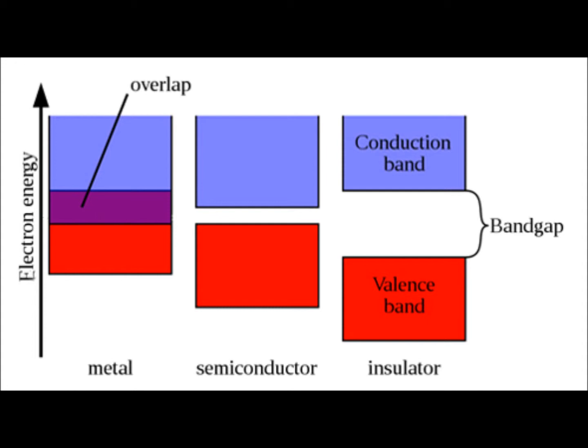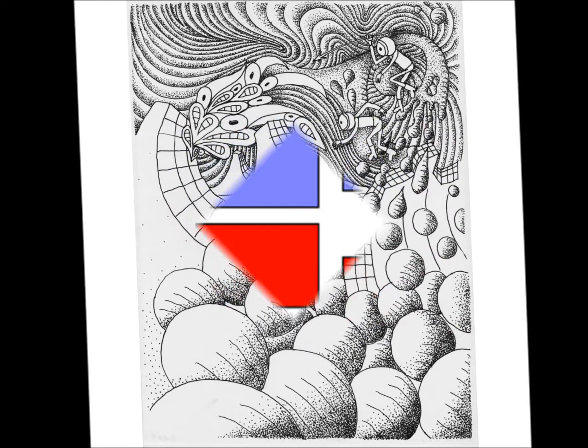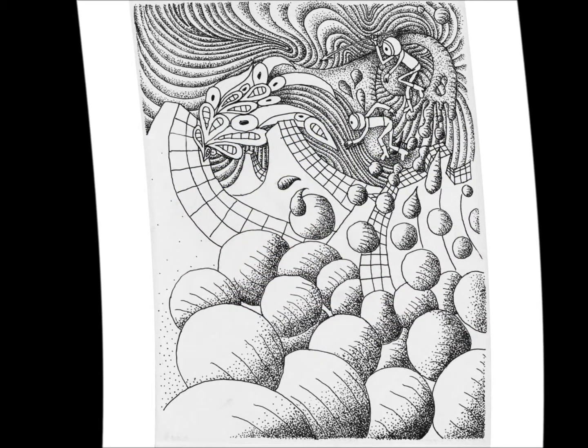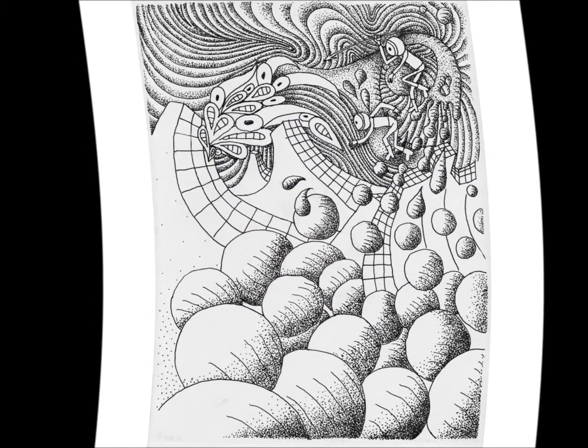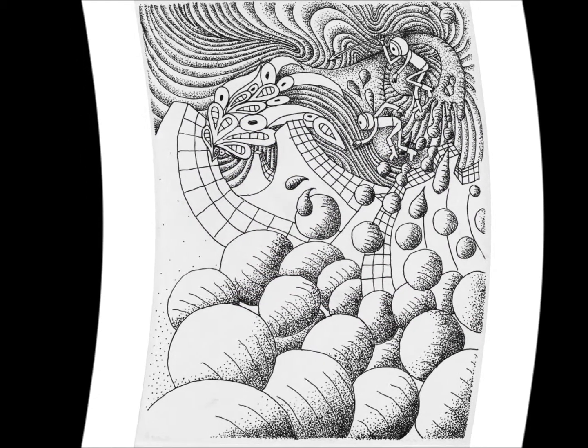Band gap increase makes conductive materials into semi-conductors, semi-conductors into insulators, and makes insulators even better insulators. These two properties of nanomaterials — tunneling and band gap increase — seem inconsistent.